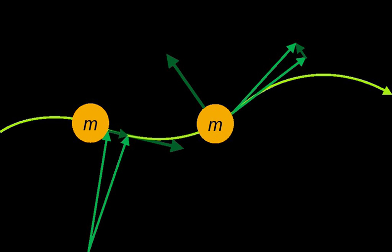Jerk j equals da/dt, which equals d²v/dt², which equals d³r/dt³.